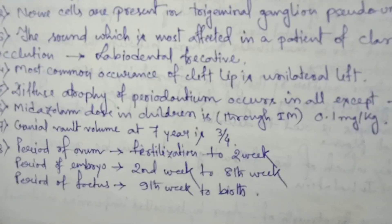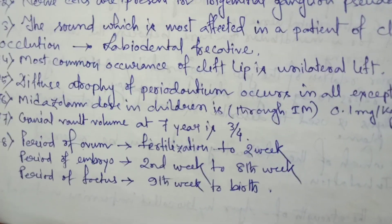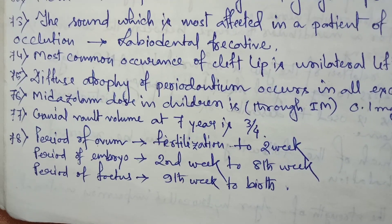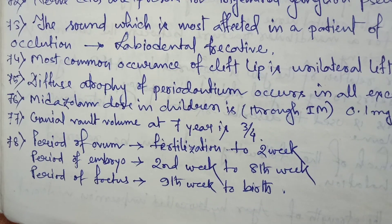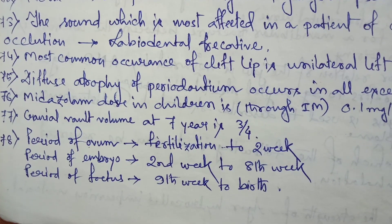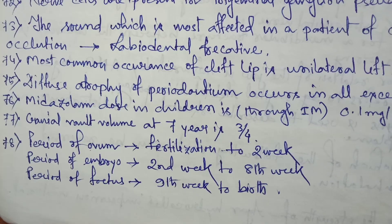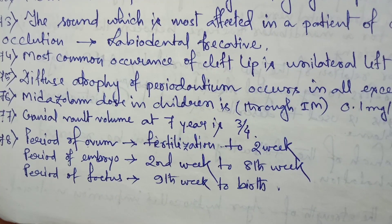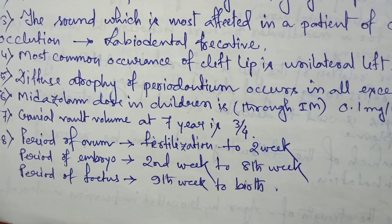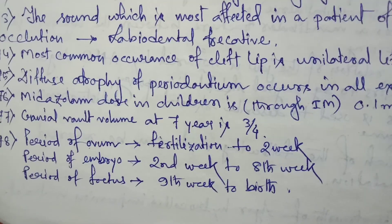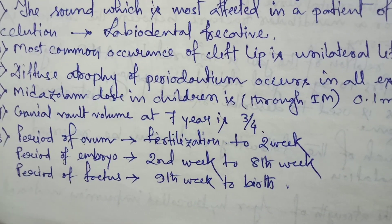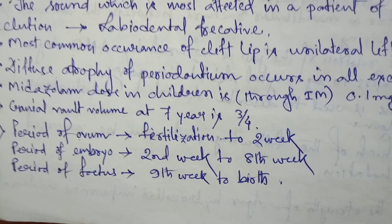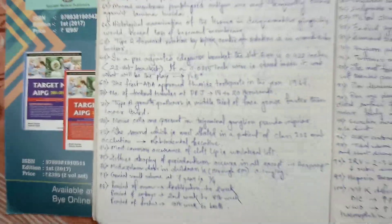Midazolam dose in children via IM is 0.1 mg per kg. Cranial vault at 7 years is three-fourths of the adult. Period of ovum: fertilization to 2 weeks. Period of embryo: 2nd week to 8th week. Period of fetus: 9th week to birth. That was one page.